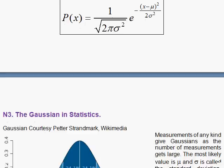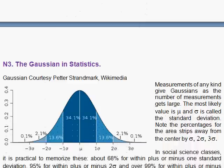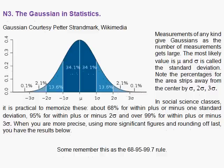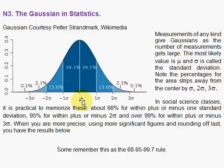The central limit theorem in mathematics says that when you have a population and measure a sample population over and over again, your measurements tend toward the Gaussian. So let's look at the Gaussian, and let's mark off here our center, which is the mean, the average. The values tend to cluster about this mean.